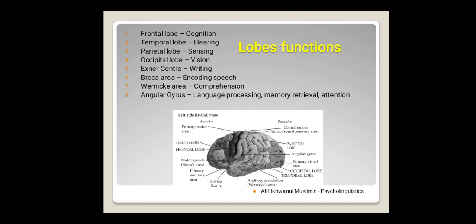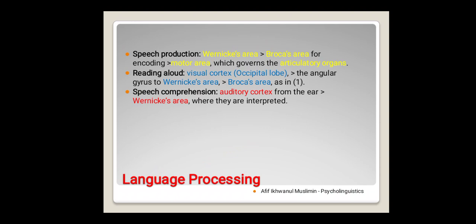There are some language processing in our brain, but the main parts are three. The first is speech production. When there is an input come, just like a question comes to your ear, then it's going to be processed in your Wernicke's area. In the Wernicke's area, there is a process of comprehension. Then it sends to Broca's area.